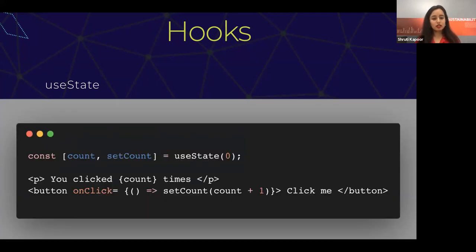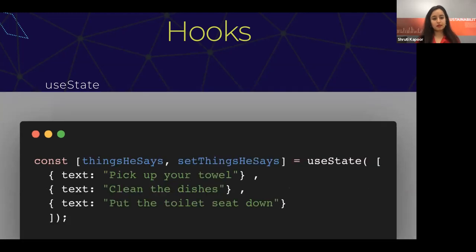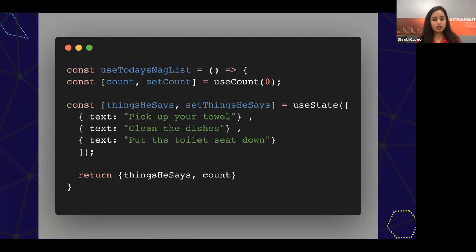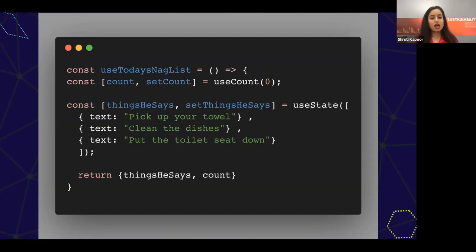Here's an example — you display 'you clicked count times' and to update it you're passing in count plus one. You can also pass objects to useState — for example, a to-do list with a list of items that are done or not done. You can also make custom hooks by combining multiple hooks together. The only constraint is that you need to return a state variable and a setter function.